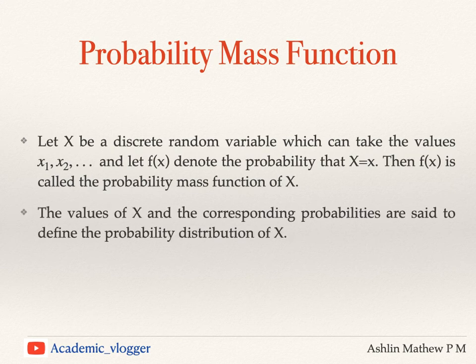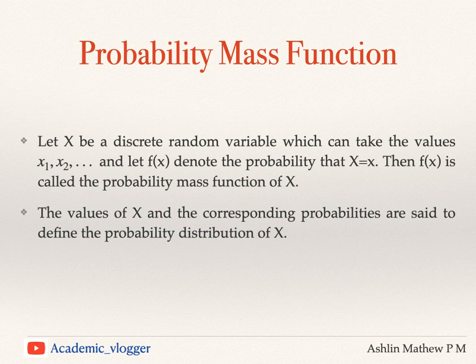The values of x and the corresponding probabilities are said to define the probability distribution of x. That means the possible values of x and their corresponding probabilities define the probability distribution of x. So this probability mass function along with x gives the probability distribution of the random variable x.